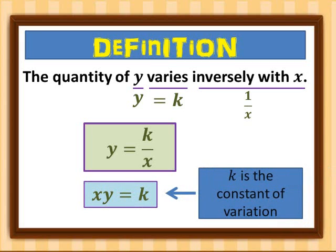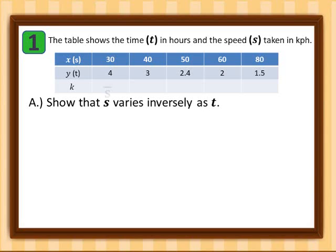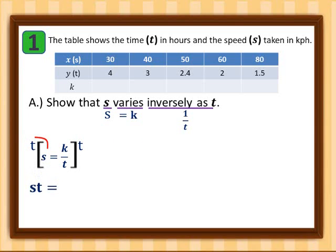For the first example, the table shows the time in hours and the speed in kilometers per hour. Letter A asks us to show that s varies inversely as t. Our equation is s is equal to k over t. We multiply everything by t, so s times t equals k.